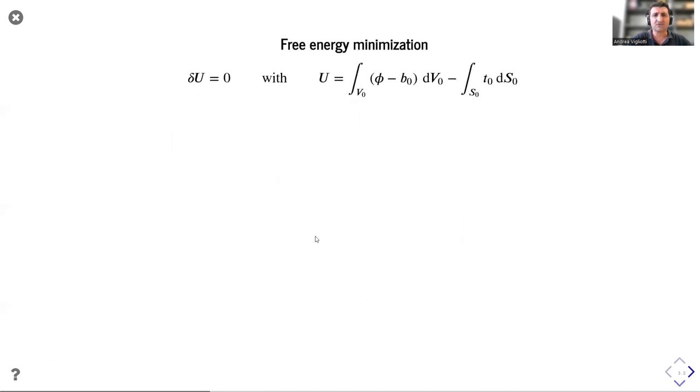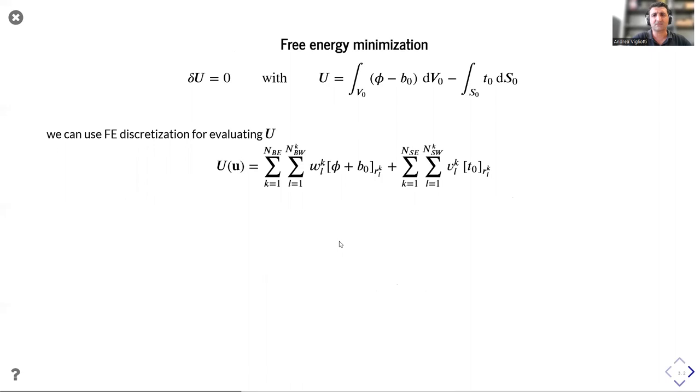One alternative approach is to use the free energy minimization principle, which states that at equilibrium, free energy is stationary. In order to find the free energy corresponding to a given configuration, we can use the same discretization of the finite element method. But this time, we only deal with scalar quantities like the strain energy density of the material or the potential of external forces. We can then find the residual force vector and the tangent stiffness matrix as the gradient and the hessian of the free energy through automatic differentiation.